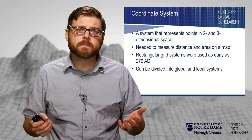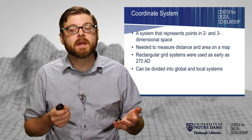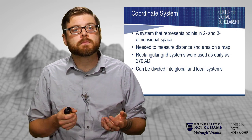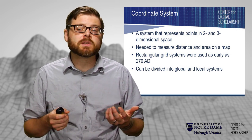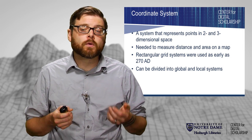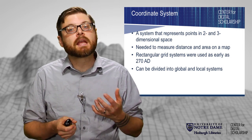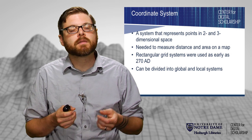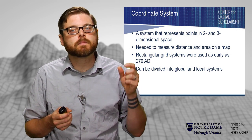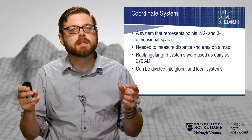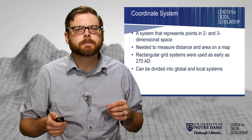We have global coordinate systems, which work well for the entire world but may introduce errors in particular locations. And we have local coordinate systems that work really well for a particular spot on the world, but we can't do everything with them. For example, we couldn't plot both data from Borneo and from South Bend, Indiana on the same map using a local coordinate system.